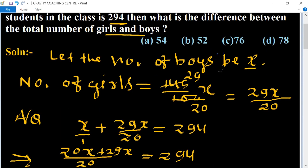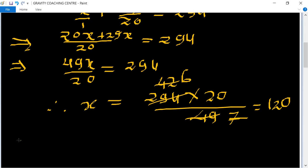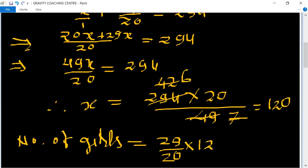And the number of girls is 29x. Number of girls equal to 29 upon 20 into 120. Cancel by table of 2, 6, so 174.